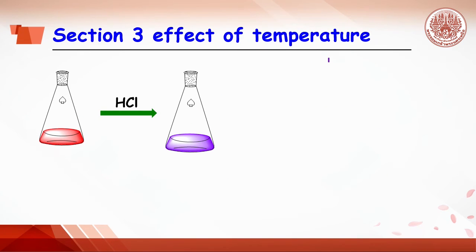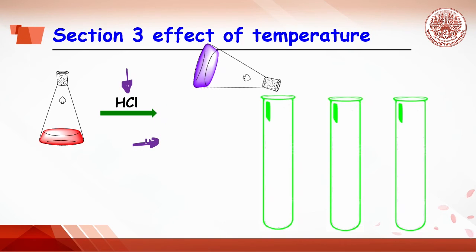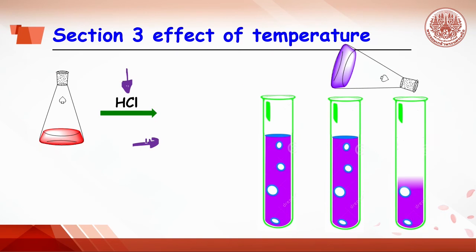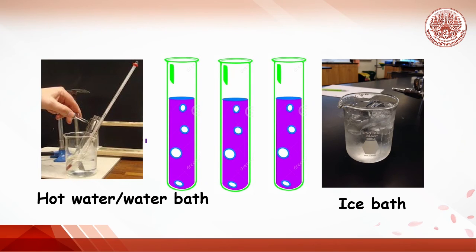Section 3: effect of the temperature on shifting the equilibrium position, and determine whether the reaction is exothermic or endothermic. Hydrochloric acid is added into the cobalt solution till purple color appears. Pour or drop the solution in 3 test tubes. Place the first test tube into the hot water and the second test tube into cooling bath or ice bath for 1-2 minutes. Observe the color change.